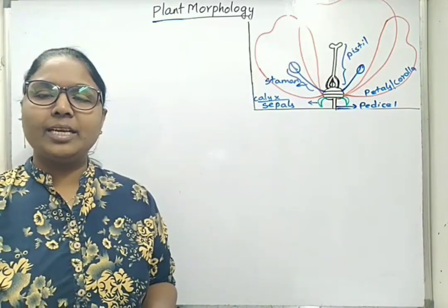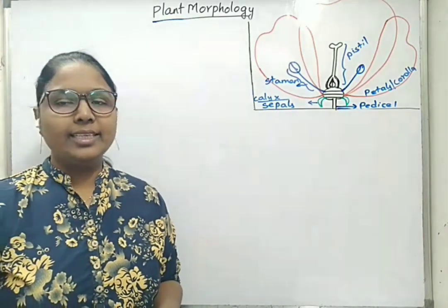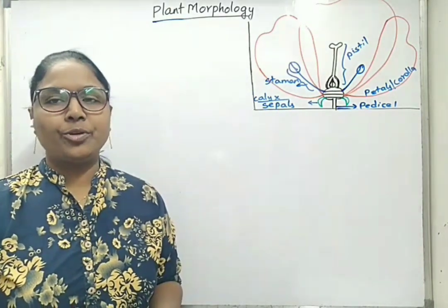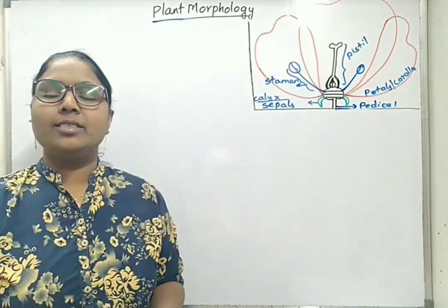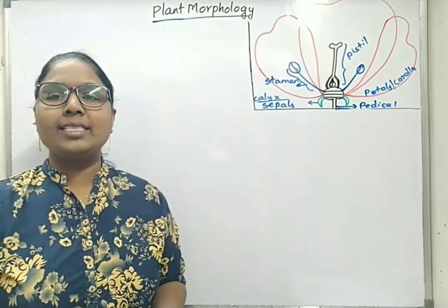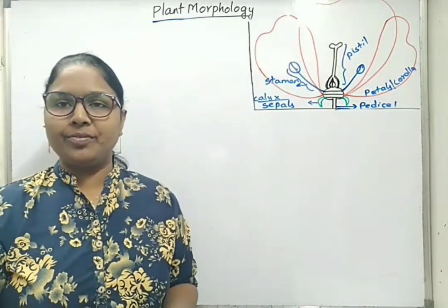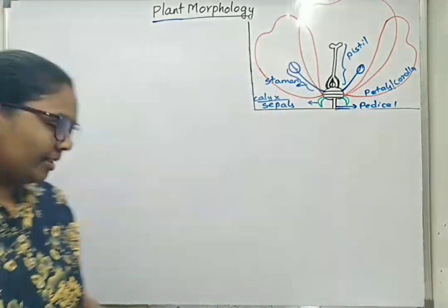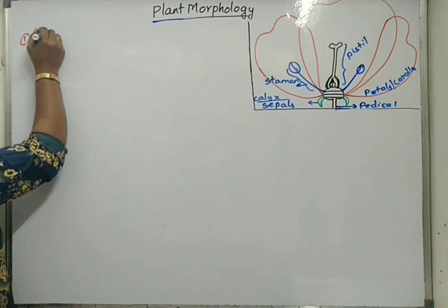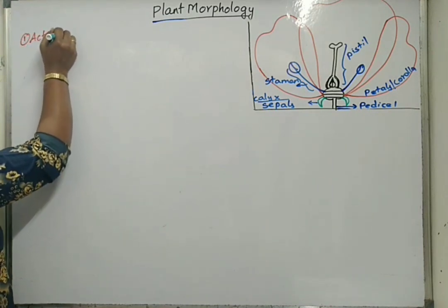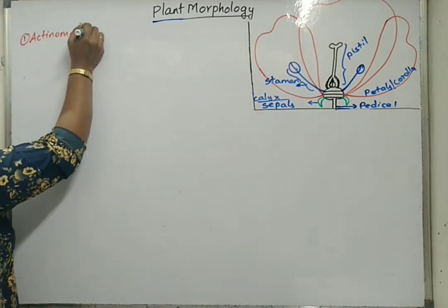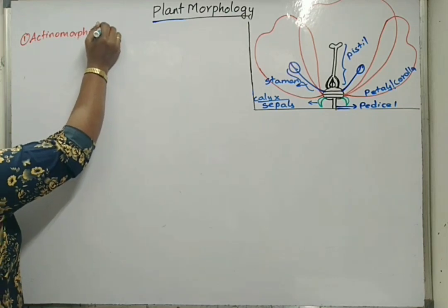Hello students, now we will learn about three different terms. Those are actinomorphic flowers, zygomorphic flowers, and asymmetrical type of flowers. So first one, actinomorphic flowers.